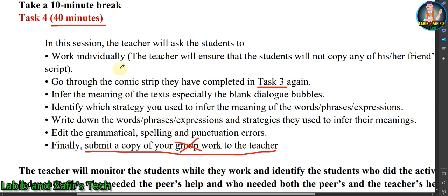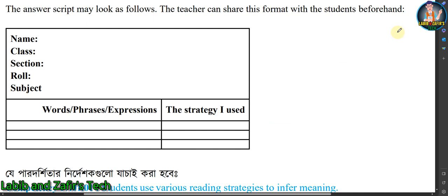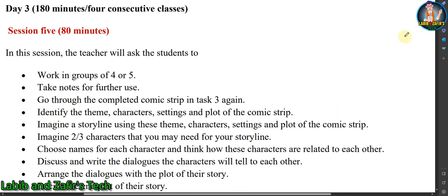Finally, submit a final copy of your work to the teacher. Remember, this is individual work, not group work. For this last task, you have to make a chart to submit your final answer. Write your name, class, section, roll, and subject (English). Write the words, phrases, and expressions you identified from the comic strip, along with the strategy you used to infer their meanings. That is how you will submit this task.